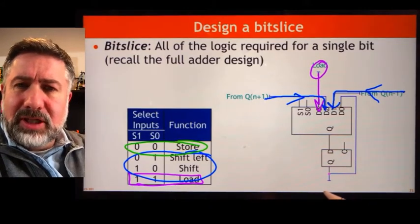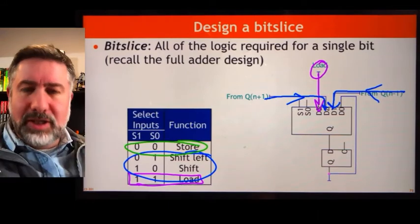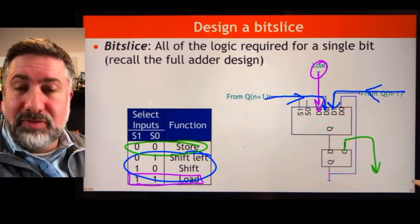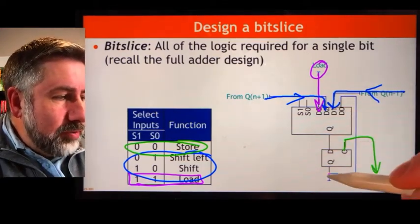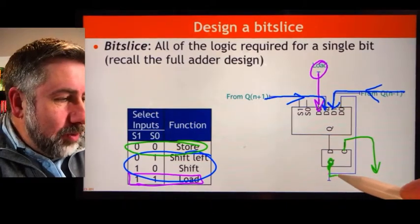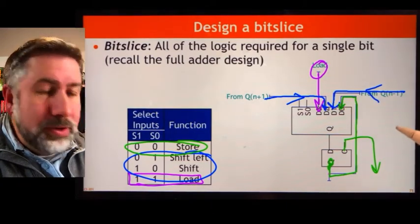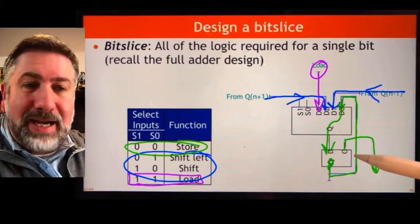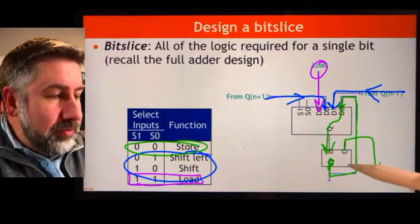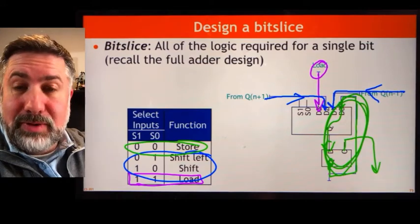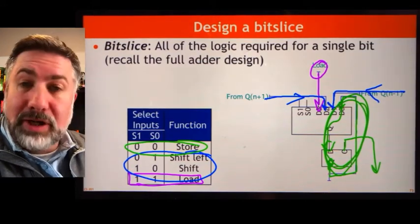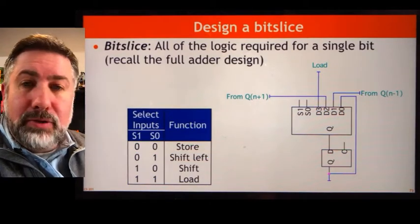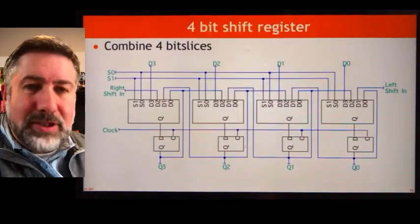We want every device in our machine on the same clock, so we don't want to modify that clock. Instead, we take the current value stored in the flip-flop and route it back as one input to the multiplexer. If that's the chosen function, that value gets routed through and presented back at the input again, reinforcing that same value back at the input of the D flip-flop for this bit slice. If we put a few of these together, it looks like this.